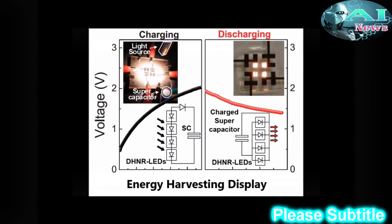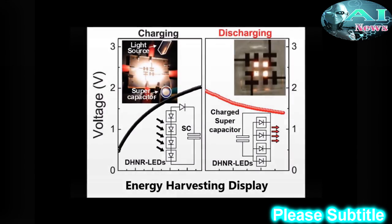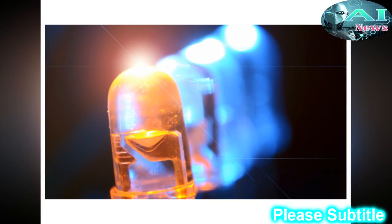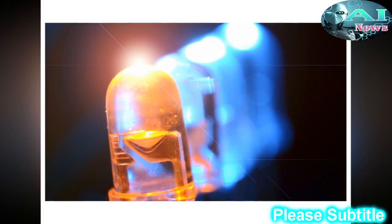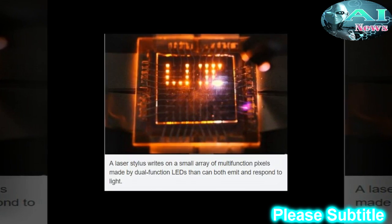The combination is what allows the LEDs to emit, sense and respond to light. The nanorod LEDs are able to perform both functions by quickly switching back and forth from emitting to detecting. They switch so fast that, to the human eye, the display appears to stay on continuously.